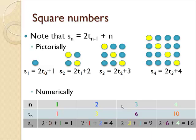So pictorially, we have S1 is 1, which is 2 times 0, that's the 0th triangular number plus 1. S2 is 2 copies in blue of the first triangular number plus 2 in yellow. S3 is 2 copies of the second triangular number plus 3 in yellow. And S sub 4 is 2 copies of the third triangular number in blue plus 4, the index in yellow.